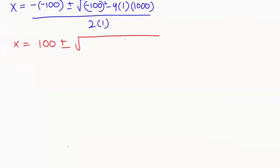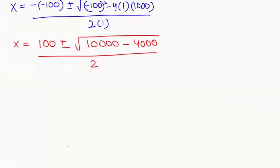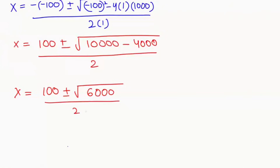Negative 100 squared equals 10000, minus 4 times 1 times 1000 gives us 4000, over 2. So this will be equal to 100 plus or minus root of 6000, over 2.